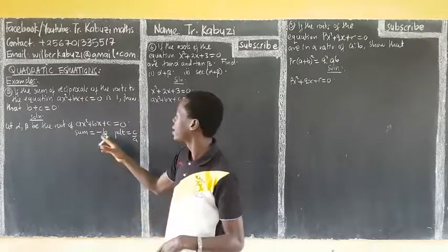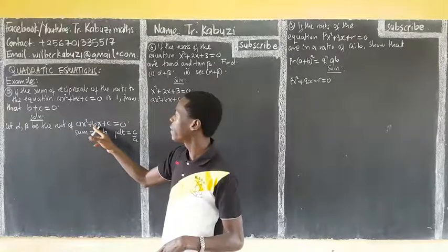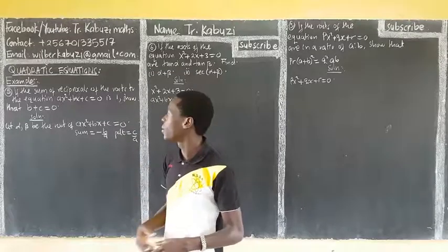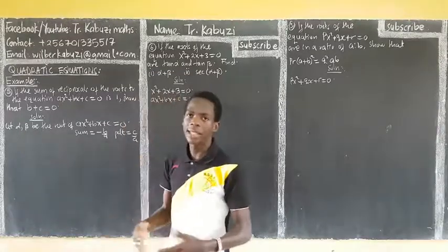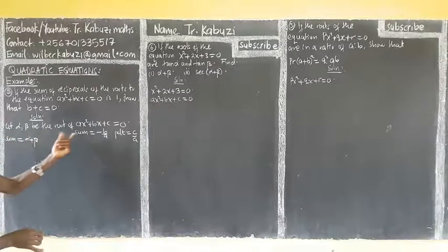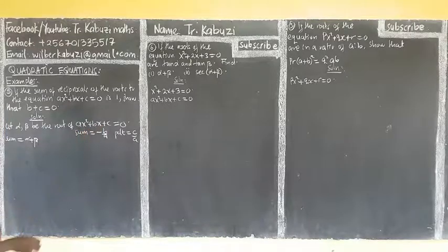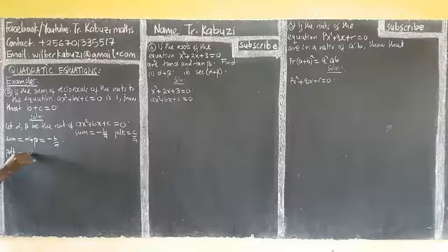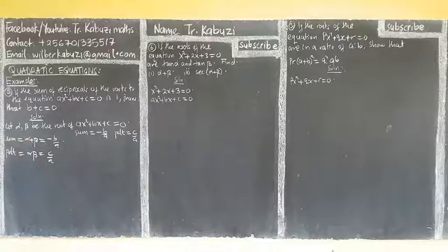Now if we have the roots, we can use Vieta's formulas. The sum is given by the negative coefficient of x over the coefficient of x squared, and the product is c over a. So the sum of alpha plus beta is negative b over a, and the product alpha times beta is c over a.